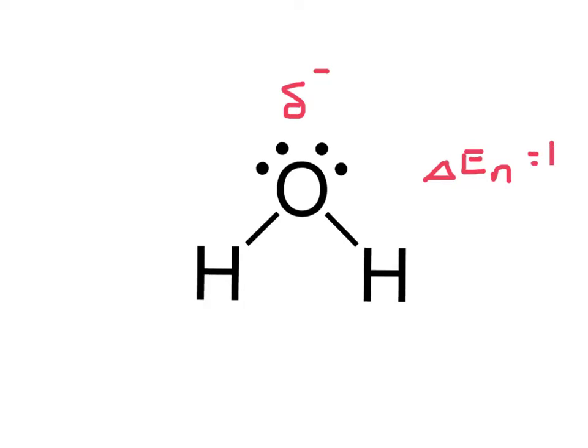The electronegativity difference is 1.4. That means the electrons spend much more time around the oxygen atom than they do around the hydrogen atom, so we're going to have a positive charge on each hydrogen. When we look at a water molecule, we end up having an unequal distribution of charges. There's no symmetry, there's no place we can divide this molecule where it looks exactly the same.